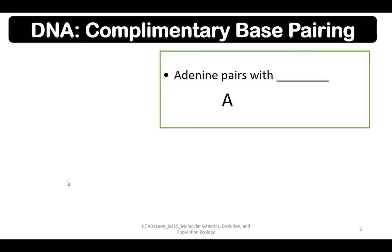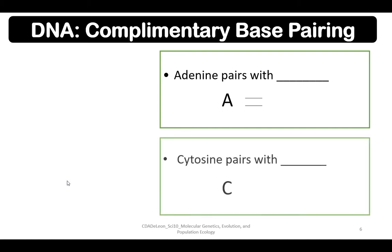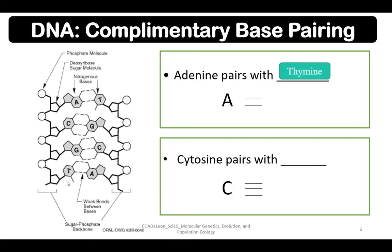In terms of DNA complementary base pairing, adenine always pairs with thymine. So adenine's partner is always thymine, while cytosine pairs with guanine.